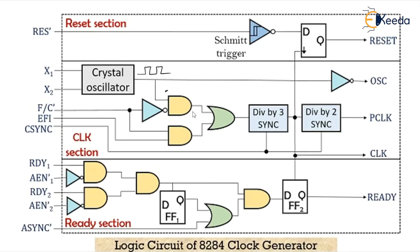The square wave signal is fed to an AND gate and a NOT gate. The inverted buffer gives the oscillator signal when we apply the square wave input.